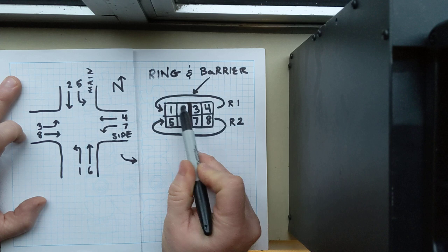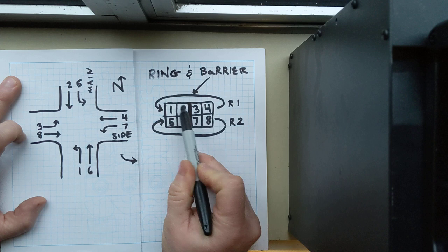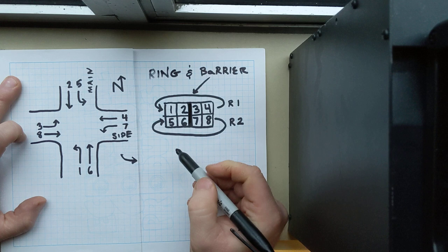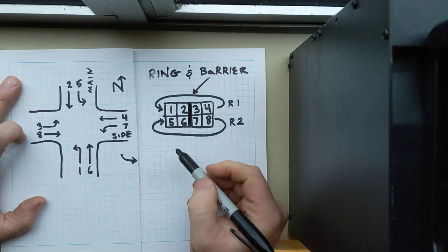None of these phases that are here can run at the same time as these phases that are over here. That's what this barrier is here for. It's a barrier. We can't run those phases together. That would be a conflict and that would cause a bad accident.